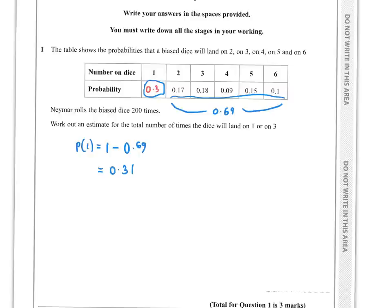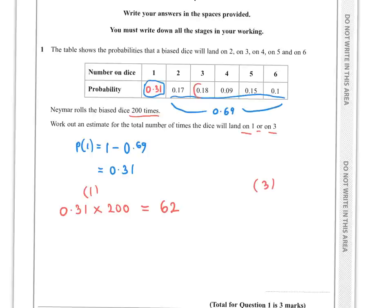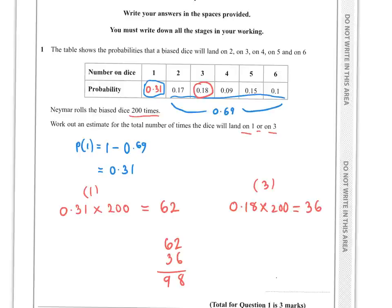So I can put that in. Naomi rolls the biased dice 200 times. Work out an estimate for the total number of times the dice will land on a 1 or on a 3. So we would have 0.31 times 200 — that's for landing on a 1 — which is 62 times. And for landing on a 3, we're given that already: that's 0.18 times 200, which is 36. So the total number of times landing on a 1 or 3 would be 62 and 36, so that would be 98 times.